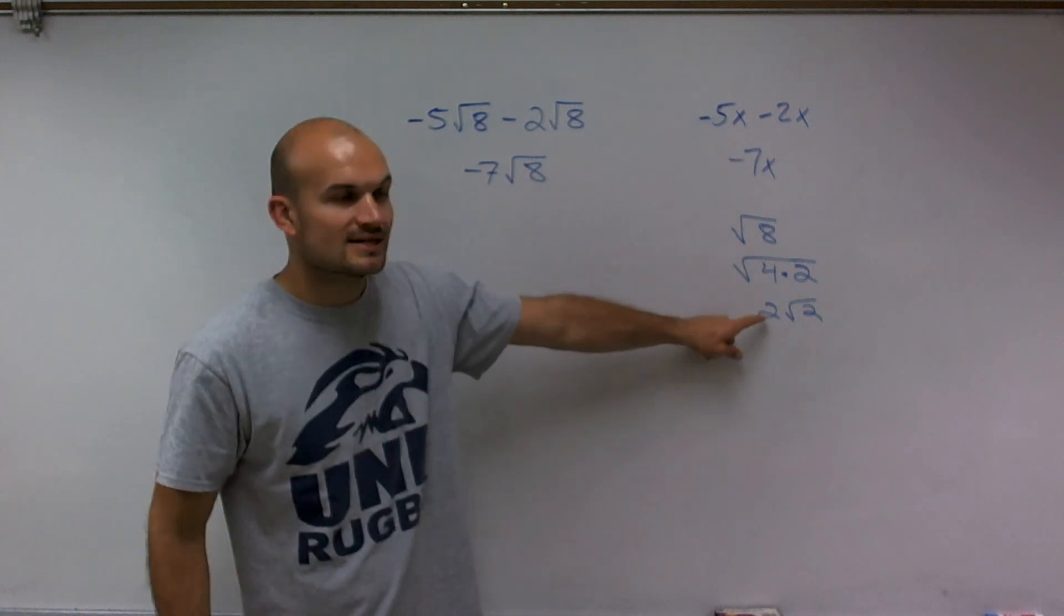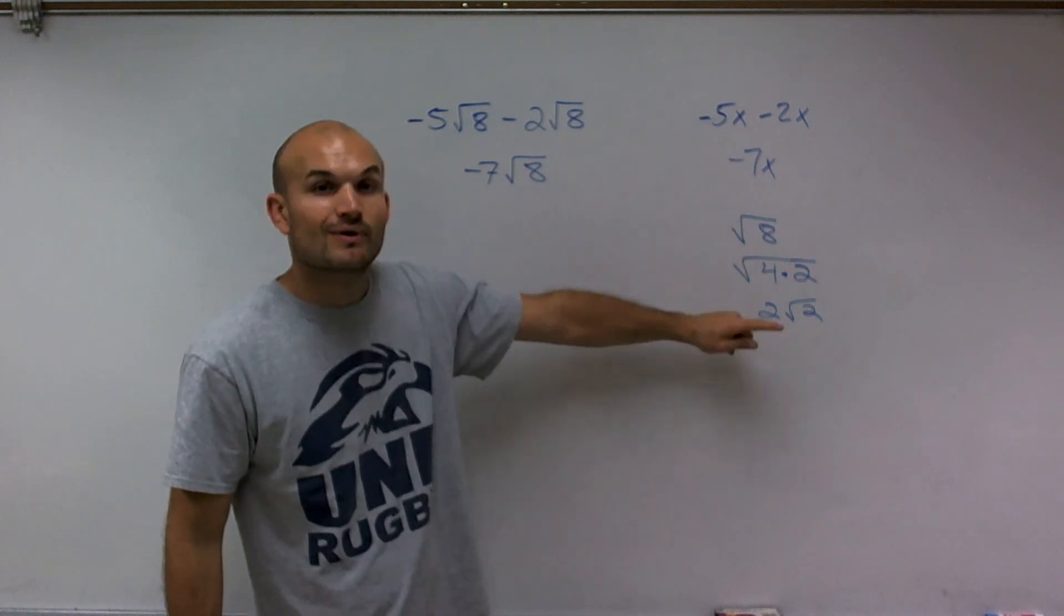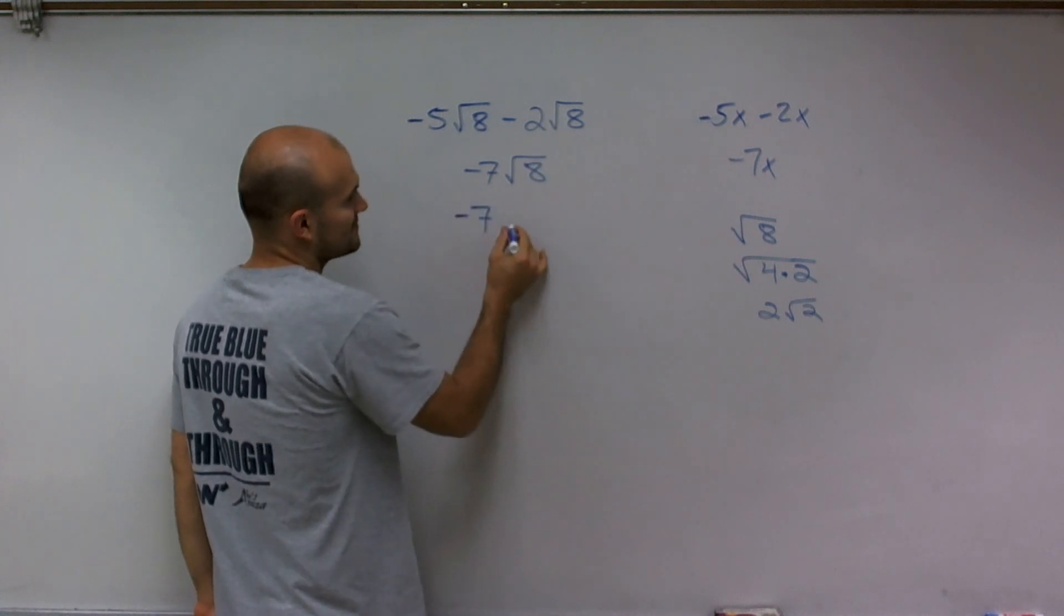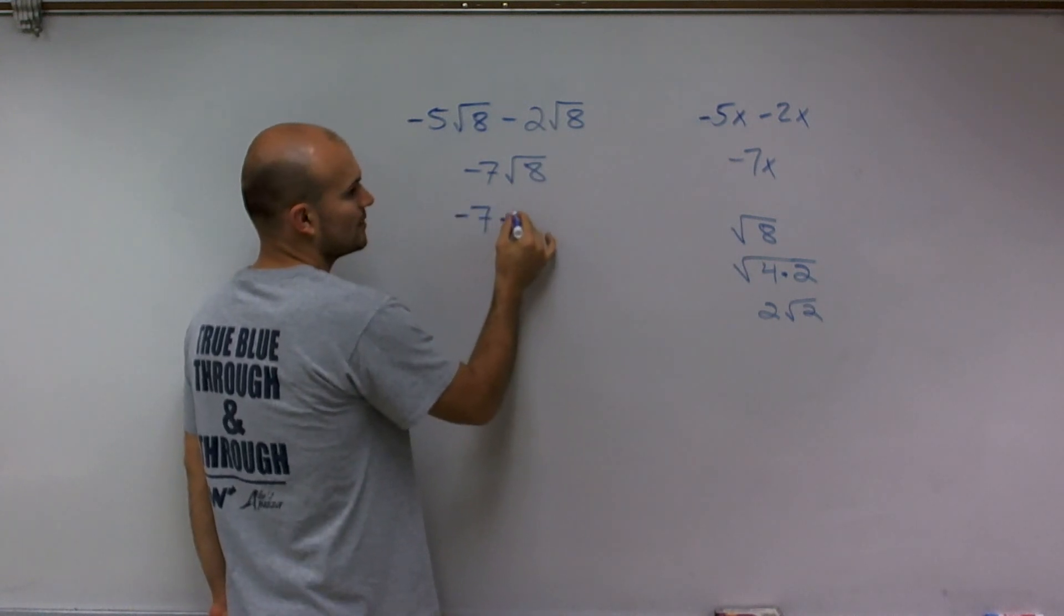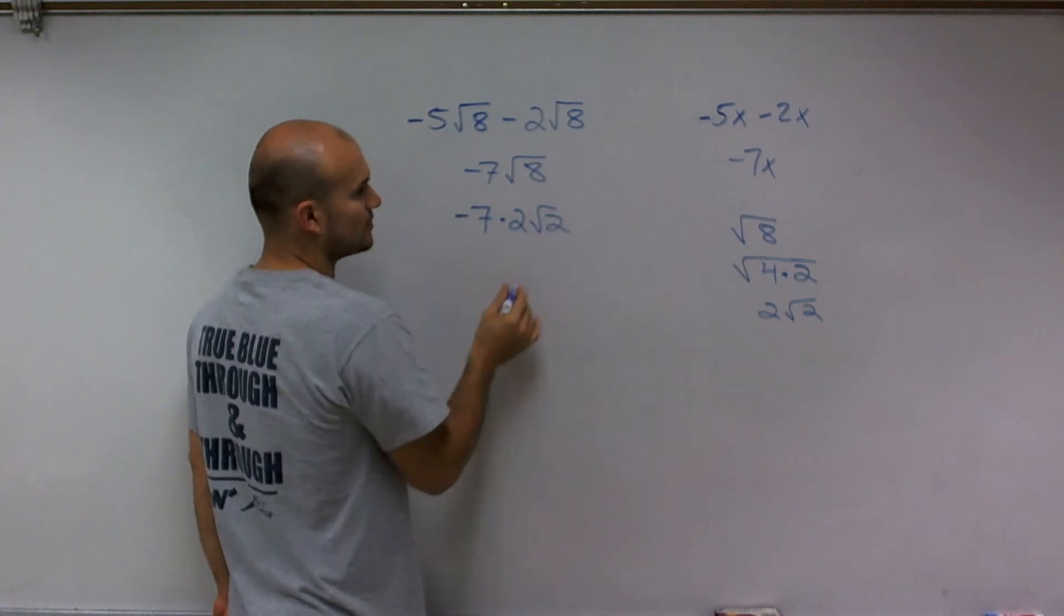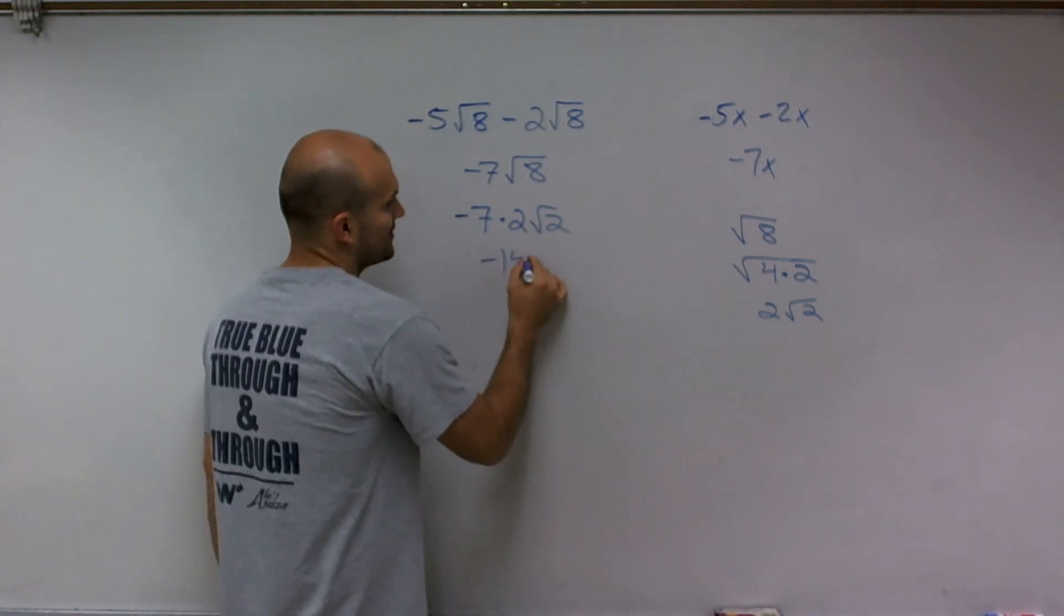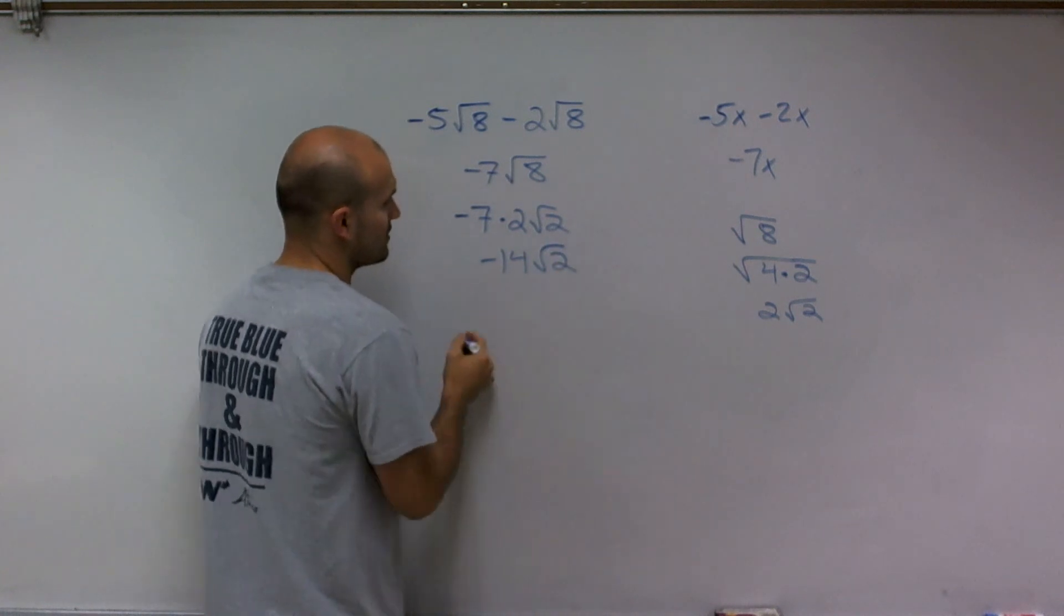So I'm going to rewrite this, and instead of square root of 8, I'm going to rewrite it as 2 square root of 2. So therefore, on this problem, I'll have negative 7 times now 2 square root of 2. I can now multiply my negative 7 and 2 to give me negative 14 square root of 2.